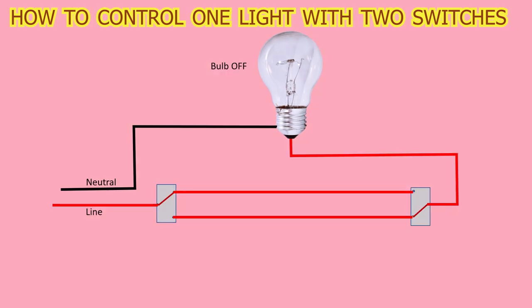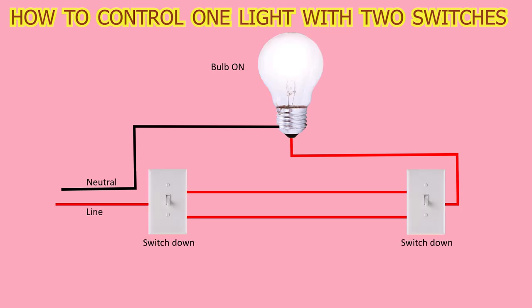Finally, the common terminal of the second switch will connect to the light. This setup enables the light to be controlled from either switch location.